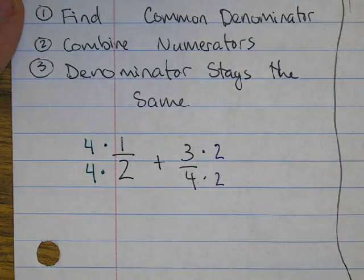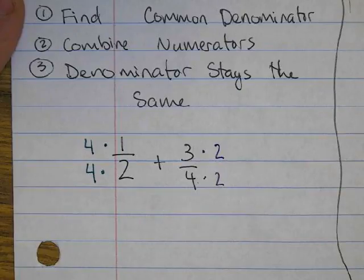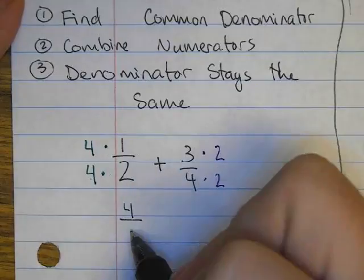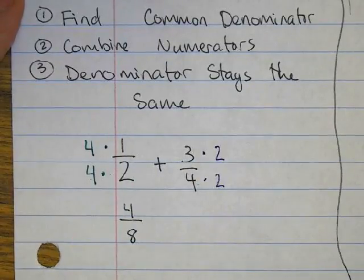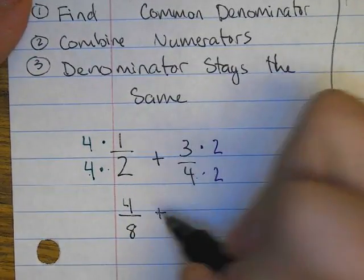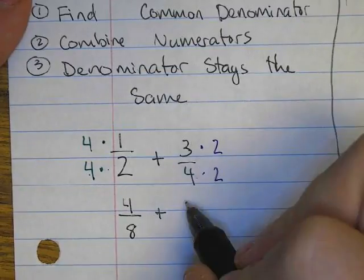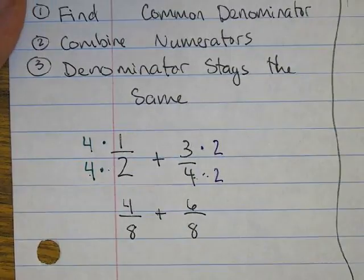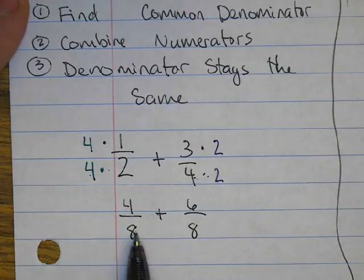When I do this multiplication, four times one is four, and four times two is eight. Bring down the plus sign. Three times two is six, and four times two is eight. Now we have a common denominator.